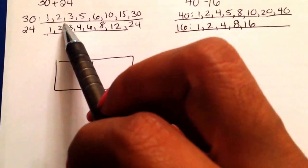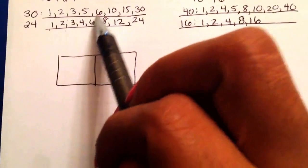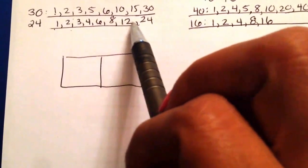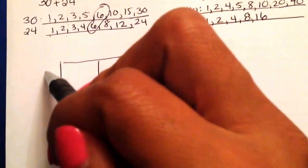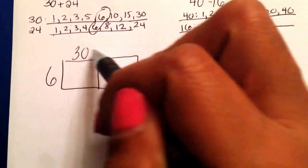They both have 1s, they have 2s, they have 3s, and they both have a 6. And that's the biggest number, so I'm going to use that 6. And that 6 is going to go on the outside.